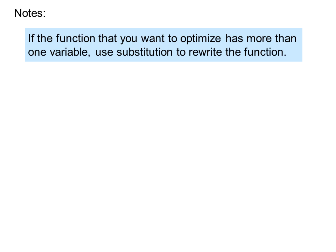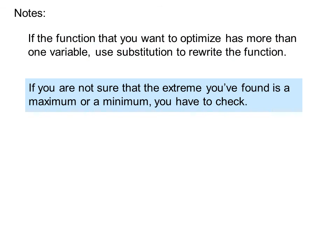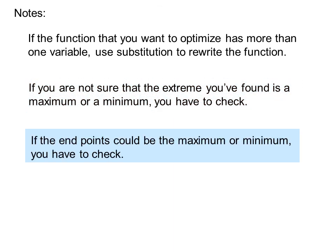Note: If the function that you want to optimize has more than one variable, use substitution to rewrite the function. If you are not sure that the extreme you found is a maximum or minimum, you have to check. If the endpoints could be the maximum or minimum, you have to check those as well.